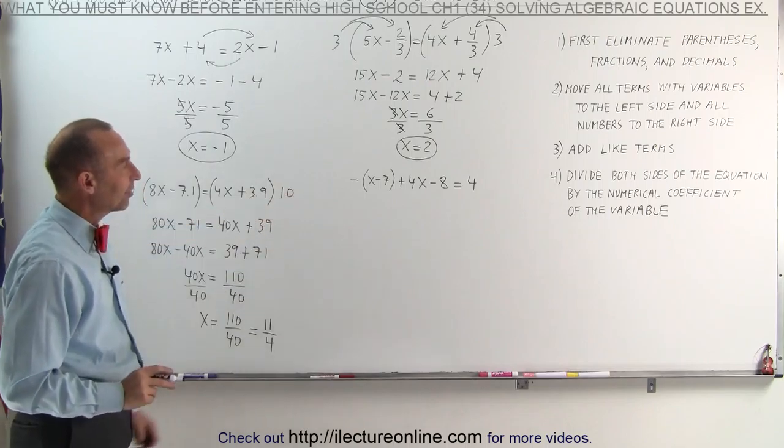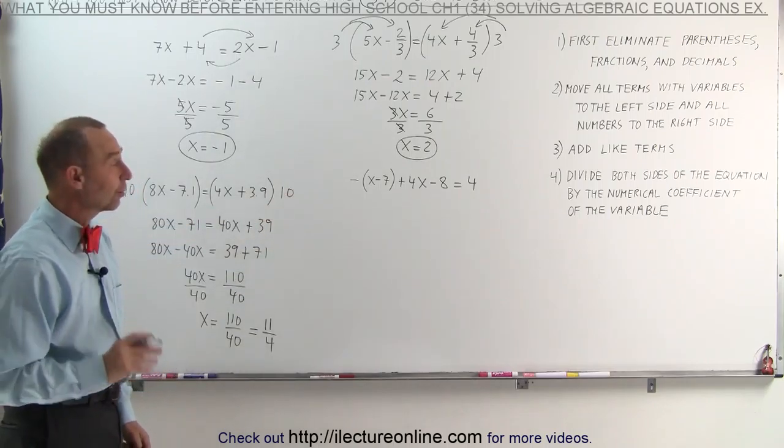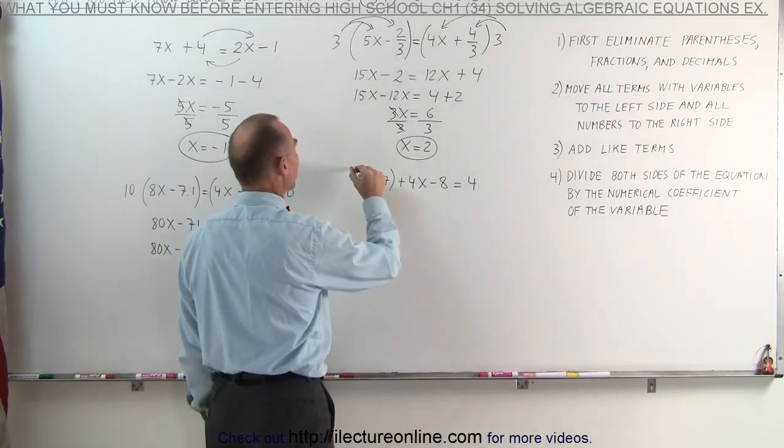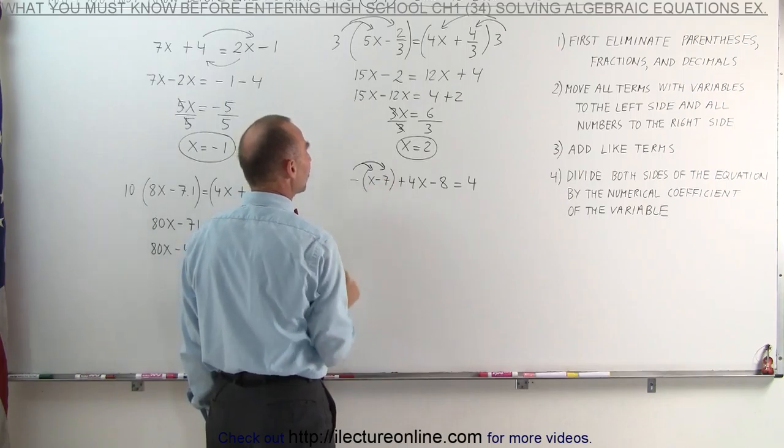And finally, our last example. Notice we have parentheses. We need to get rid of those parentheses first. We have a negative in front of these parentheses, which means when we distribute the negative, think of it as a negative 1, we change the signs inside.